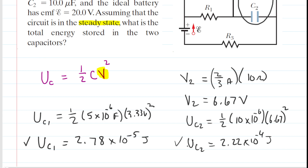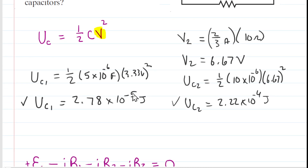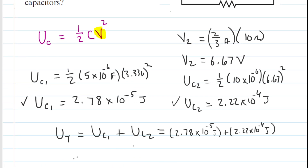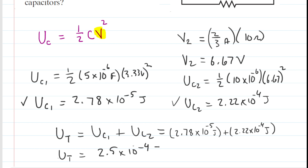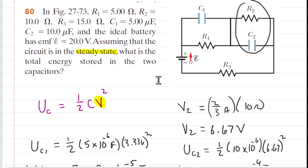To get the total energy stored in the two capacitors, we simply sum the energies of the individual capacitors. Performing that calculation, we get 2.5 times 10 to the minus 4 joules — the correct answer for the total energy stored. The key concept here again was steady state: in steady state circumstances, current is no longer flowing to the capacitors, so you can follow the current through the resistors only.